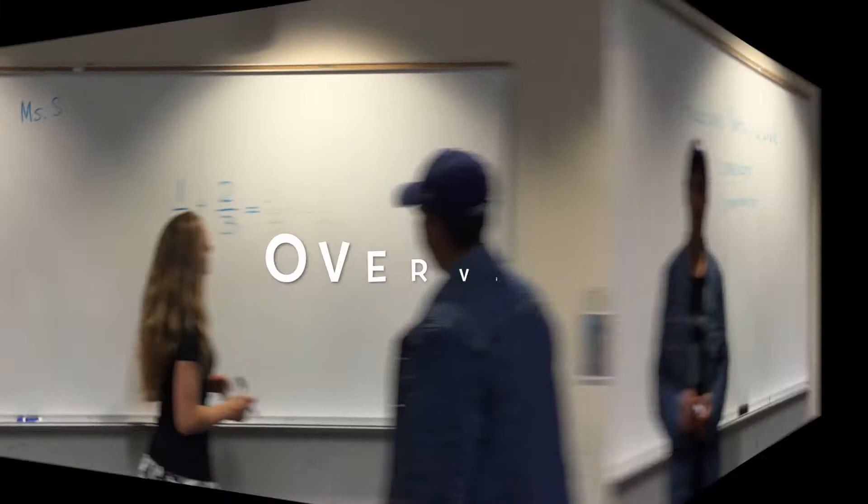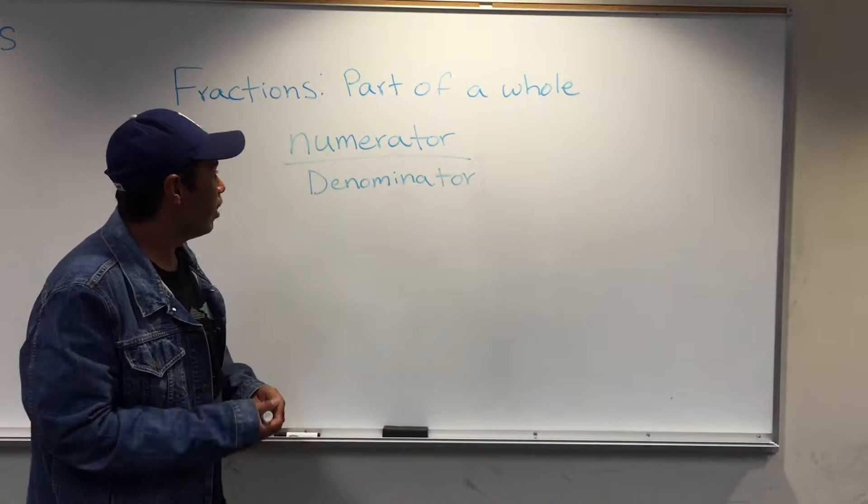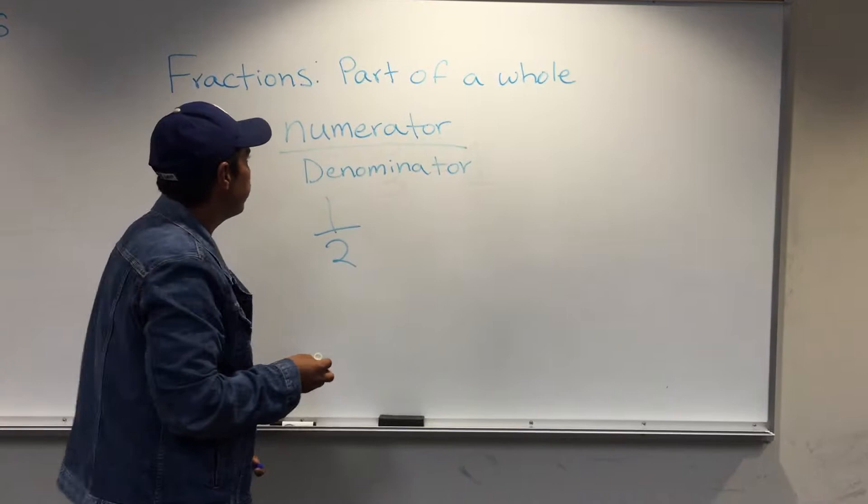So fractions are part of a whole. And the top number is known as the numerator. And the bottom number is known as the denominator. For example, we have one half. The number one is known as the numerator. And the number two is known as the denominator.